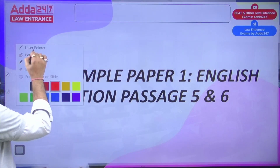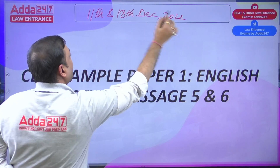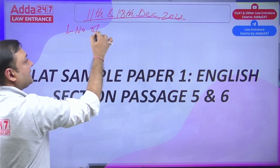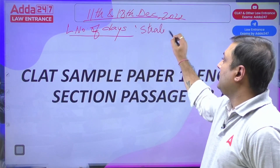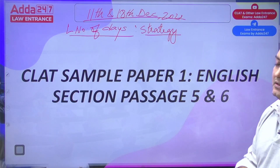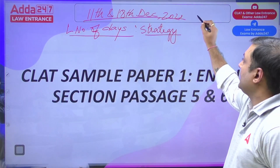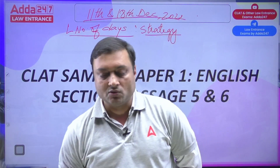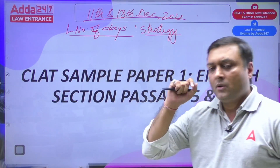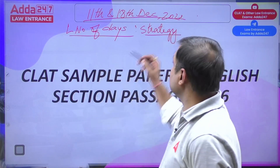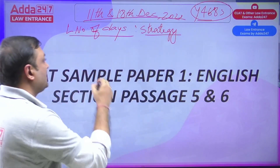The paper dates are the 11th and 18th — these are your dates. Count how many days you have left and create your strategy. If you haven't created a strategy yet, we have strategies on our channel. Use code Y468S to join the batch. The strategy right now should be more focused on mock tests.